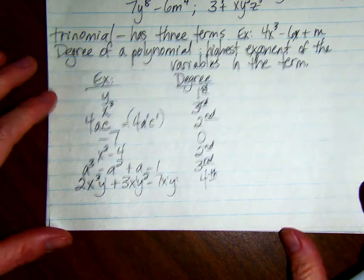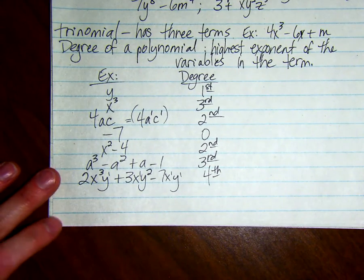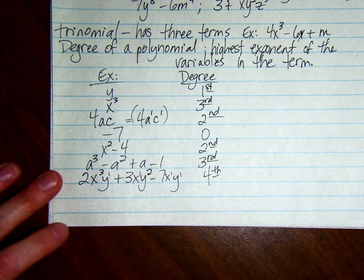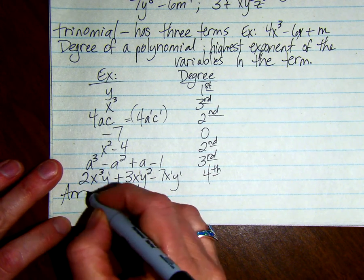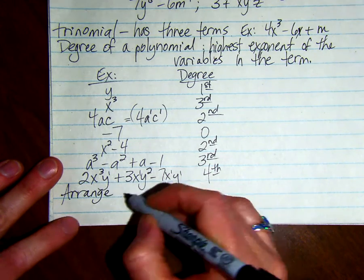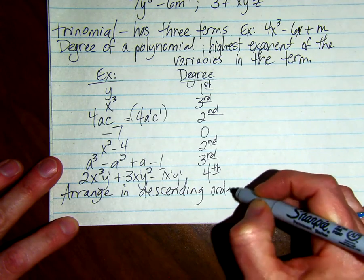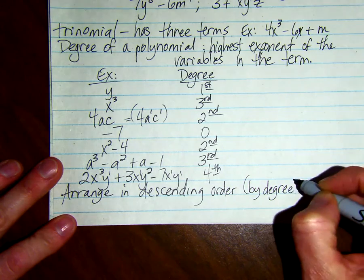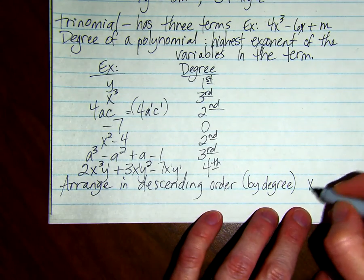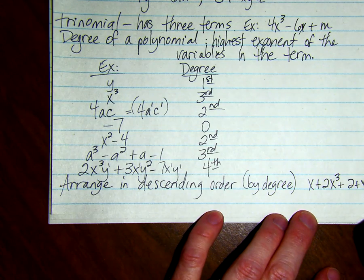Sometimes we have to arrange our terms in order, in descending order, from greatest to lowest degree. I'm going to give you an example where we have to arrange in descending order, and this is by degree.